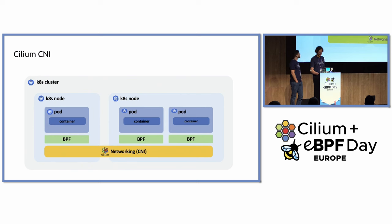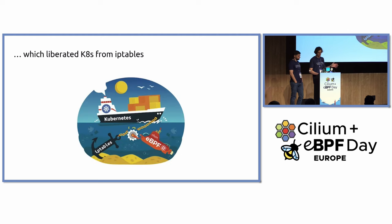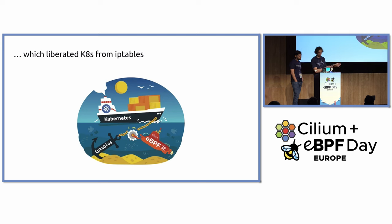Before we dive into the details of how this was implemented, some historical context. Cilium started as a simple CNI with observability and security in mind. One differentiating technology was eBPF, and with eBPF we were very flexible in what we could do — we can basically take any network packet and do any modifications we want. After solving the CNI problems, we started looking into Kubernetes generic networking problems.